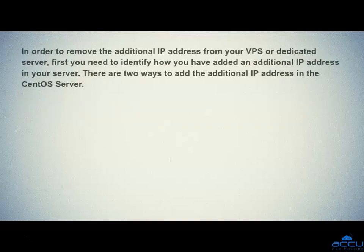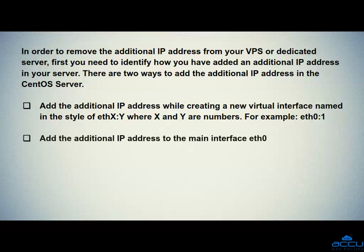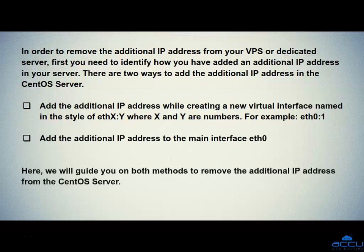In order to remove the additional IP address from your VPS or dedicated server, first you need to identify how you have added an additional IP address in your server. There are two ways to add an additional IP address in the CentOS server. First, add the additional IP address while creating a new virtual interface named in the style of ethx:y, where x and y are numbers — for example, eth0:1. Second, add the additional IP address to the main interface eth0. We will guide you on both methods to remove the additional IP address from the CentOS server.